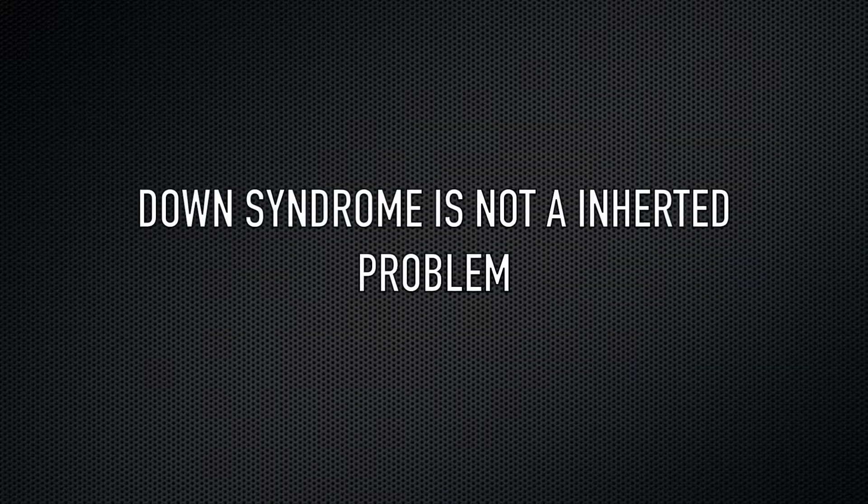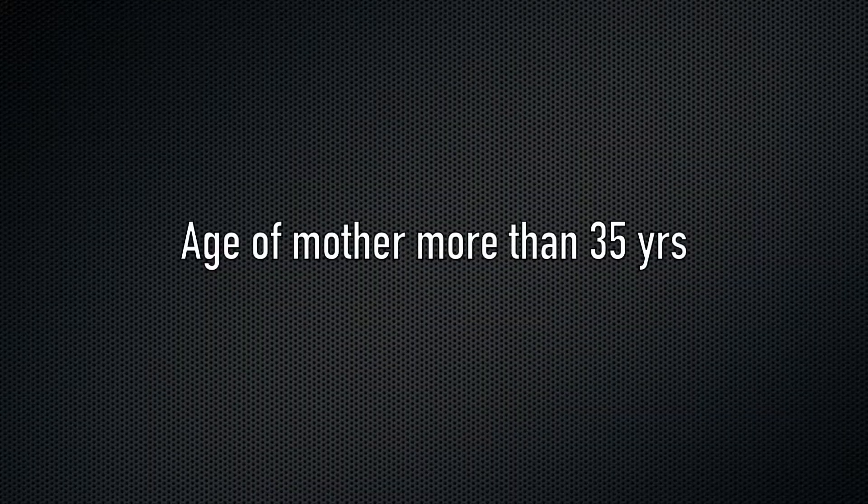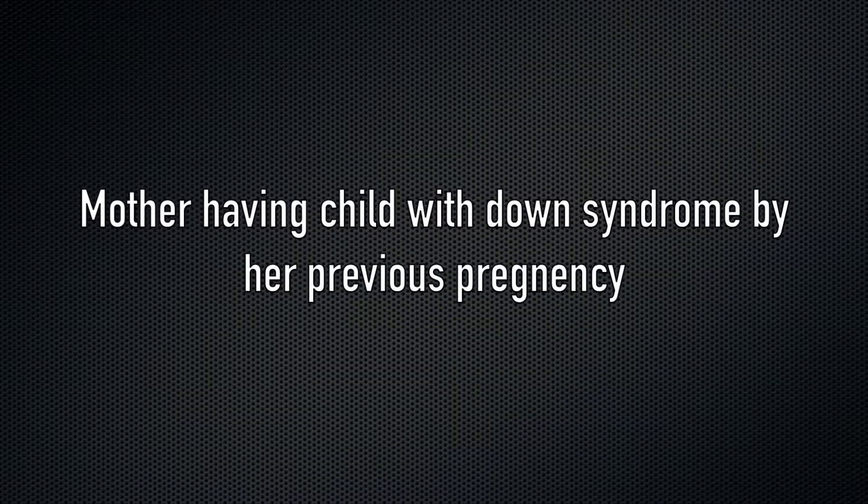You must be wondering — is this a hereditary problem? No. Down syndrome is not an inherited problem; it does not run in families. It is just a genetic abnormality that happens without any specific cause. Although there is no known cause, there are certain risk factors that make a child more prone to develop Down syndrome. These risk factors include the age of the mother being more than 35 years, and if a mother has already given birth to a child with Down syndrome, there are higher chances the second baby will also have the condition.